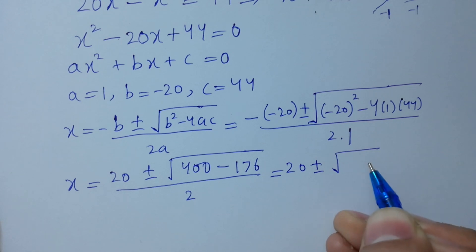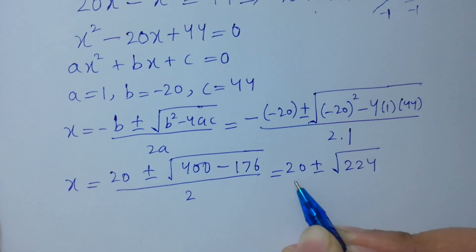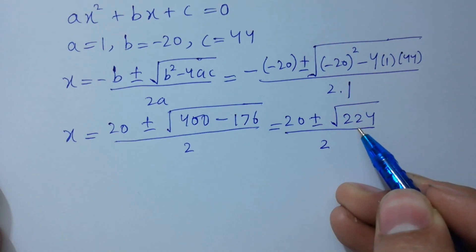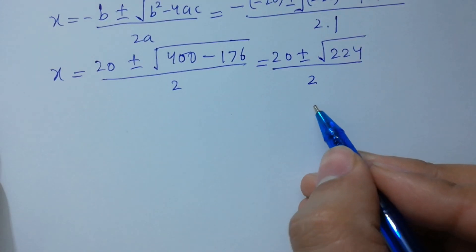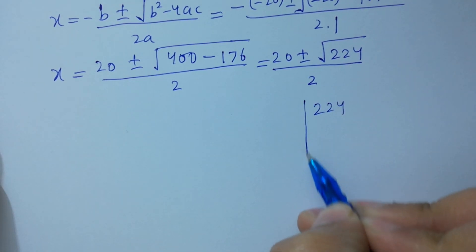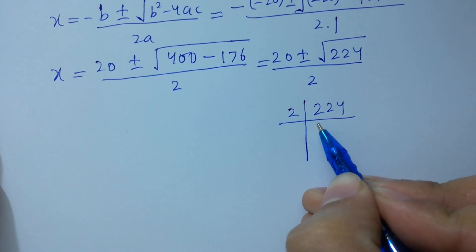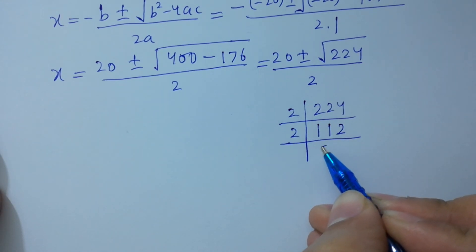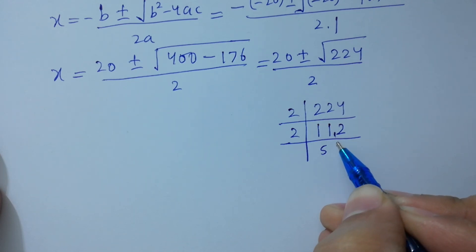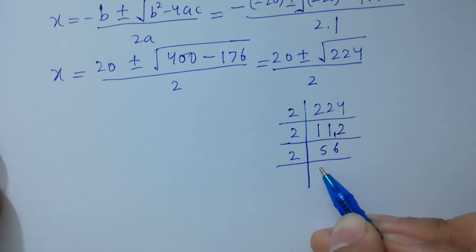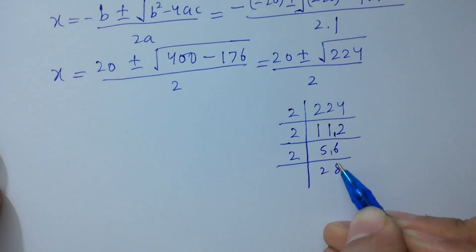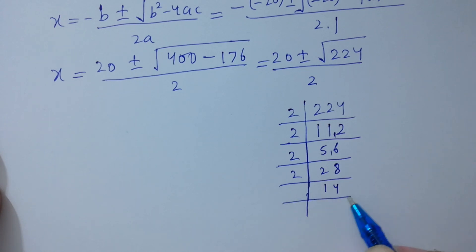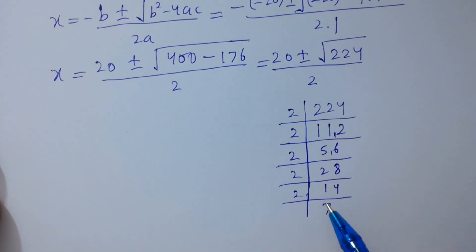We have 20 plus or minus square root of 400 minus 176, which gives square root of 224, over 2. To simplify, find the factors of 224. 224 is divisible by 2: 2 times 112, 2 times 56, 2 times 28, 2 times 14, 2 times 7.